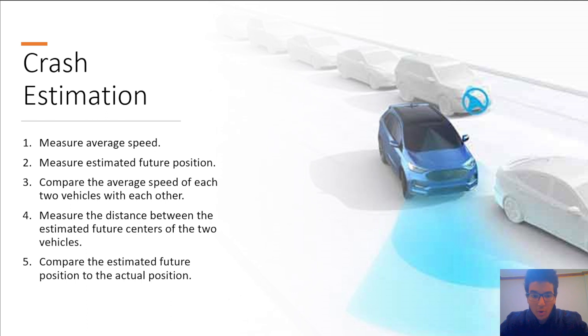Now, let's dive into our work. The algorithms to detect the crash. I found it is better to list the whole steps at the start and go in depth later. So, first, we need to estimate the speed of the vehicles. Second, estimate the future positions for the vehicles. And third point is compare the average speed for each vehicle at specific frame number. And the fourth point is we need to measure the distance between the estimated future centers. And lastly, compare the estimated future center to the actual future center.